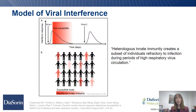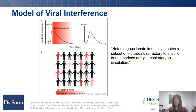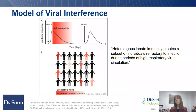Tamirla et al. have looked into this specifically between rhinovirus and SARS-CoV-2, putting out a model for this viral interference. A quote from the paper: 'Heterologous innate immunity — that is the interferon response — causes a subset of individuals who are refractory to infection during periods of high respiratory virus circulation.' In other words, if people had a rhinovirus infection, it conferred protection to them, so even though COVID was circulating rampantly, certain individuals were protected from getting that infection.